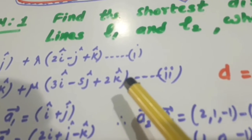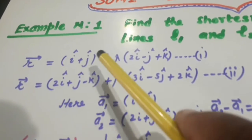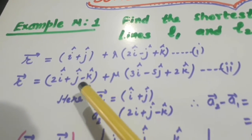The second line is R equals 2i plus j minus k plus mu times 3i minus 5j plus 2k. So these are, this is A1, this is A2, this is B1, this is B2.